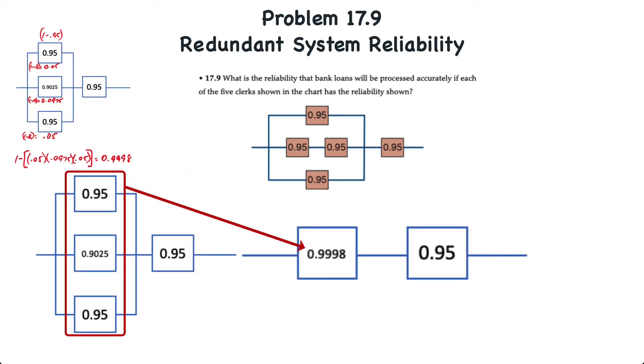Now, our system looks like this, where we're left with two components in series, one at 99.98% reliability and one at 95% reliability. This is now a very simple system in series, where to determine the final reliability, we multiply those two together.